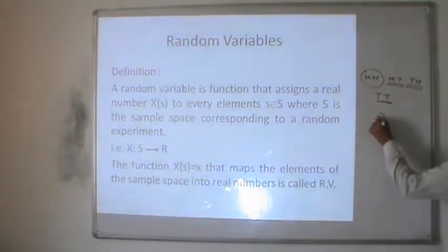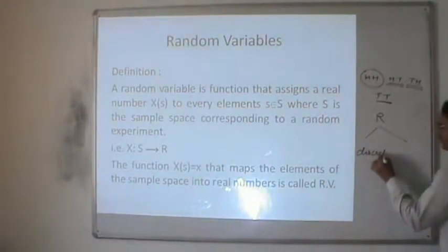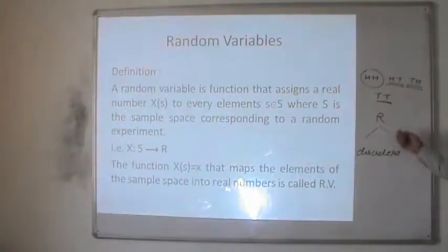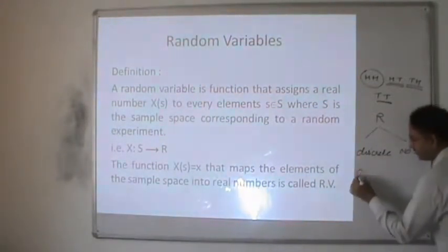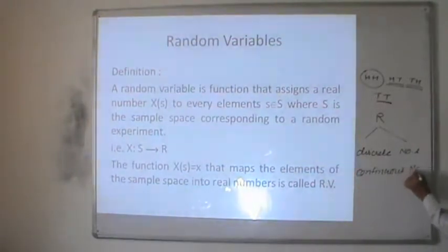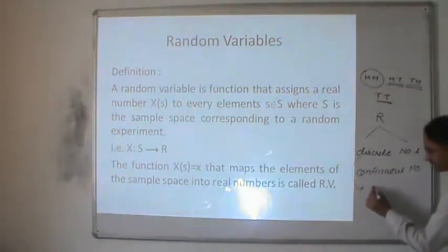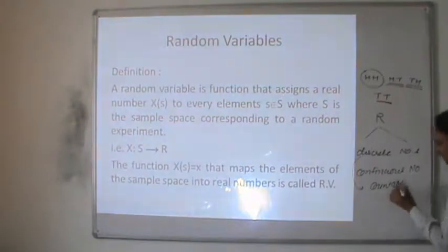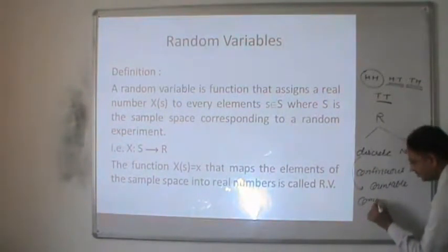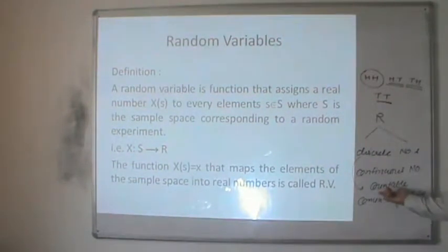We can separate real numbers into two different types: first, discrete random variables, and second, continuous real numbers. In discrete numbers, there are two types: first, countably finite, and second, countably infinite. So a discrete number is either countable or countably infinite.